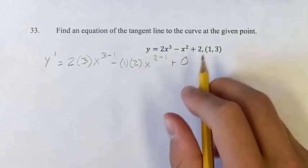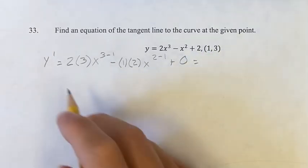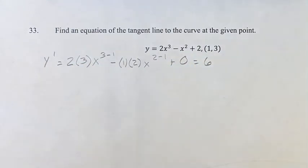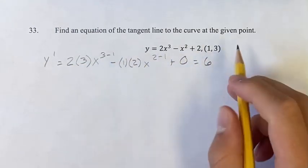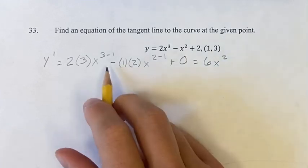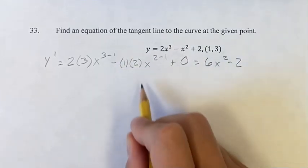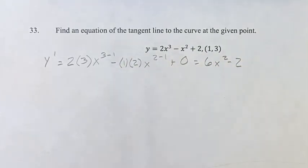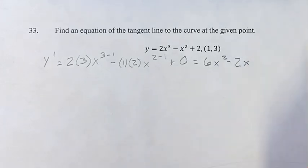This is something we can now simplify. So y prime is equal to 2 times 3 is equal to 6, x to the 3 minus 1 is x squared. Minus 1 times 2 is minus 2, x to the 2 minus 1 is x to the 1, which is just x.